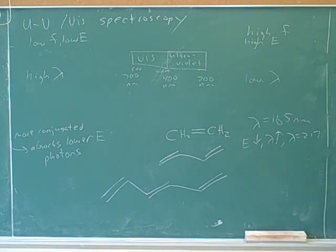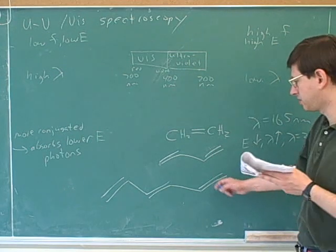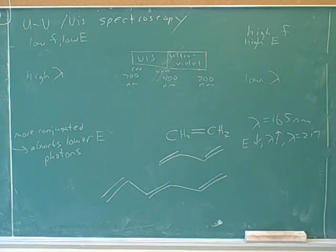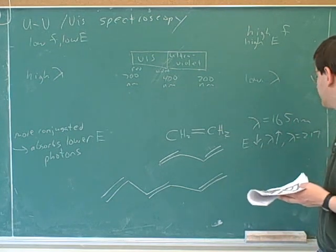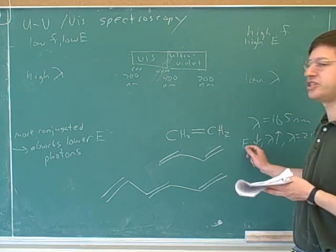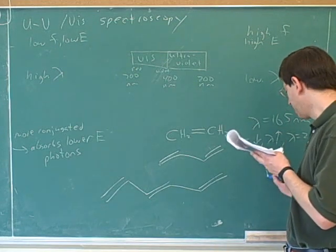Now, would this molecule absorb above 217 or below 217? This one should be even higher than 217 because this is even more conjugated. This is even more conjugated, so the energy should be going down even more. The wavelength should be going up even more.